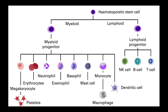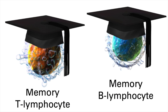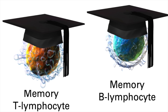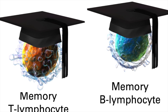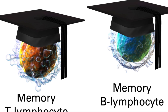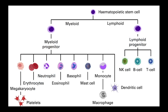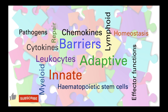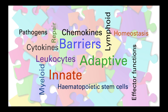T and B lymphocytes, once they have encountered a particular threat, are able to form memory cells which survive for many years and ensure that if the same threat is ever encountered again, the immune response is much more robust and efficient. So, the immune system is classically described as having three layers: the barriers that prevent pathogen entry in the first place, the cellular and soluble components of the innate immune response, and then the highly specific cellular and soluble response of the adaptive immune system. But remember, all of these are acting as one system, not in isolation.